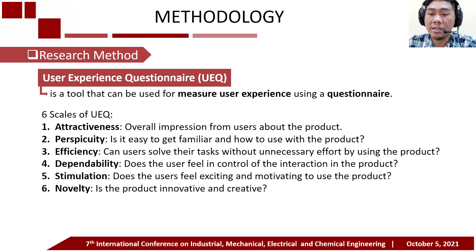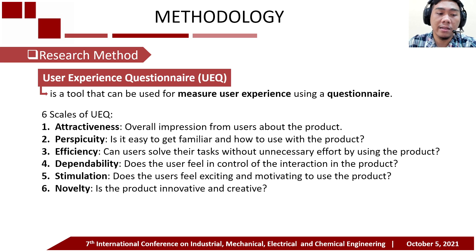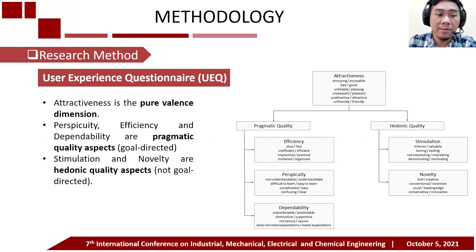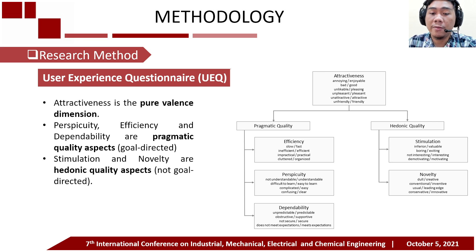We evaluate the DSS by measuring its user experience. User experience measurement is carried out using the User Experience Questionnaire, or UEQ. UEQ consists of 6 scales: Attractiveness, Perspicuity, Efficiency, Dependability, Stimulation, and Novelty. Attractiveness is the pure valence dimension. Perspicuity, Efficiency, and Dependability are pragmatic quality aspects, and Stimulation and Novelty are hedonic quality aspects. The Attractiveness scale has 6 items, and each other scale has 4 items, giving a total of 26 items. The following picture shows all 26 items from UEQ for each scale.